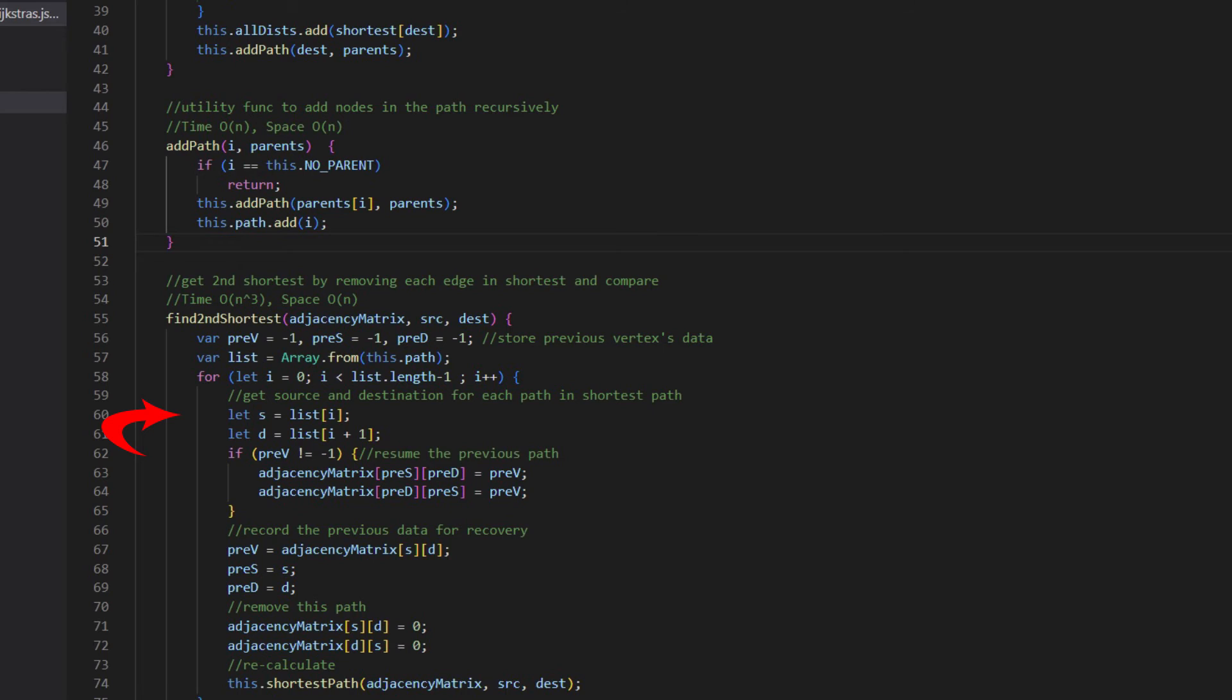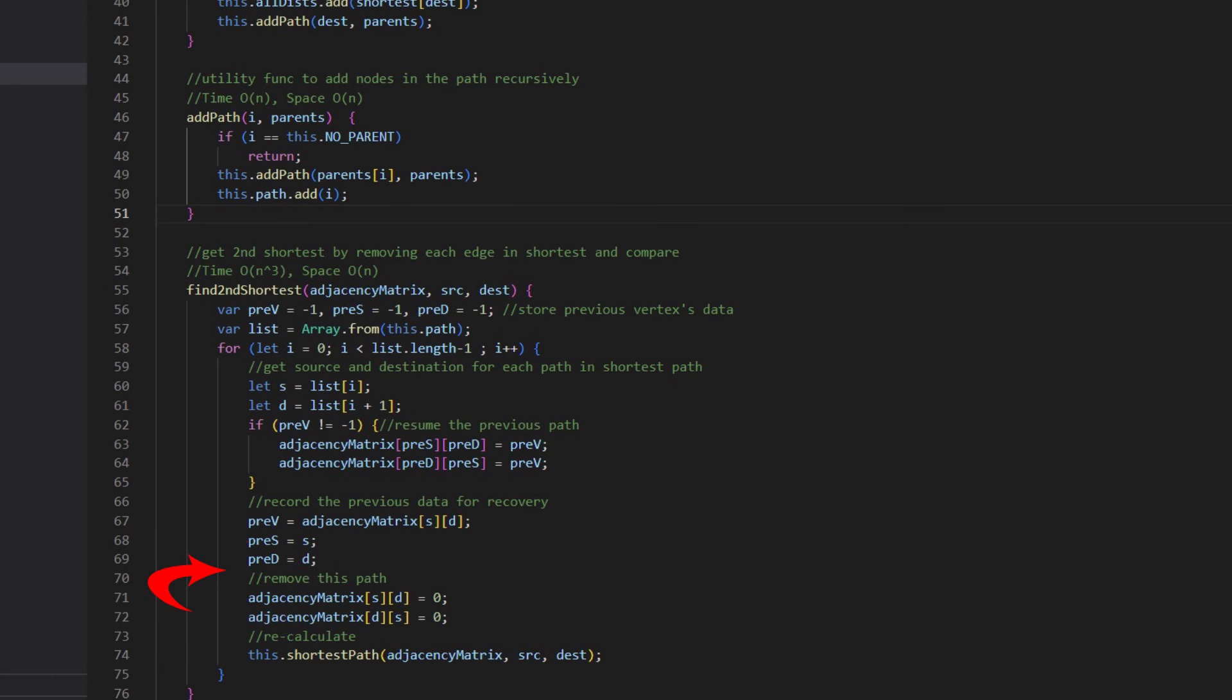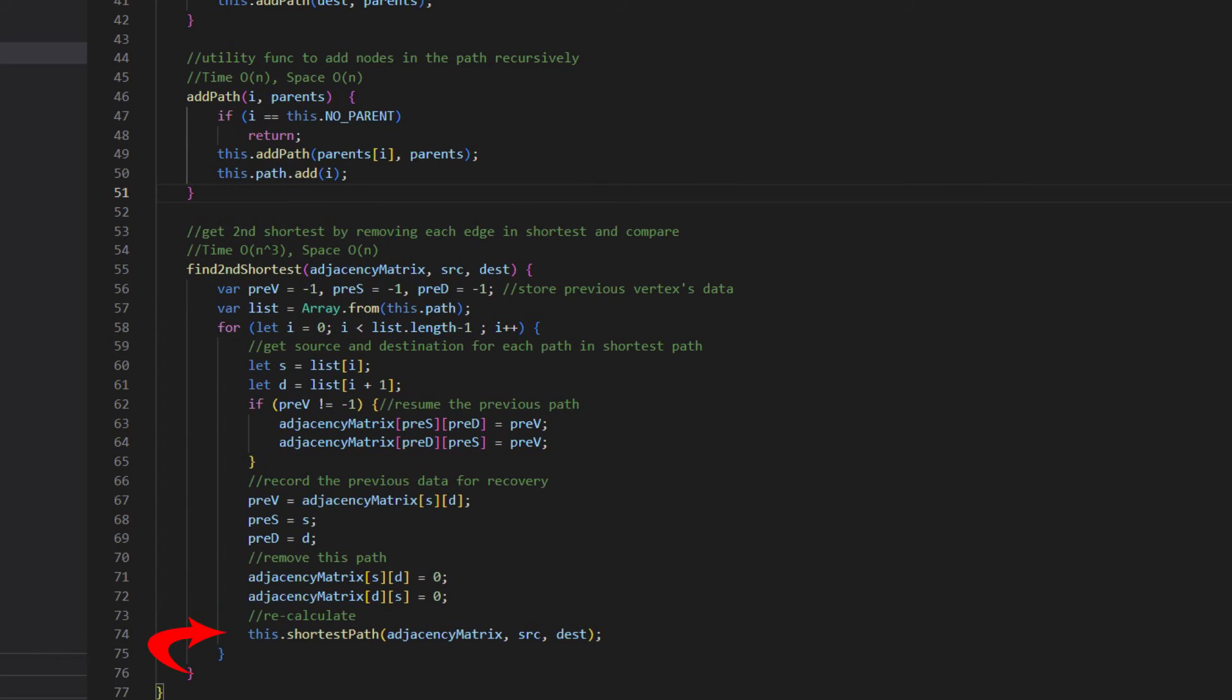Inside the find second shortest function, we loop through each vertex in the shortest path. We get the pair of source and distance. After saving the value for future restore, we remove the edge between source and distance by setting that value to be zero. Then call shortest path to recalculate. When all vertices in the path have been executed, the second shortest distance will be found and saved to the return set.